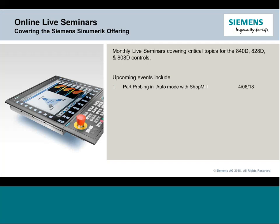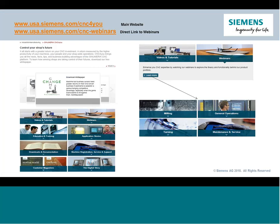Before we begin, let's highlight some of the things we have coming up. In April, we're going to be doing a part programming webinar specific to ShopMill in auto mode — in-process measuring. All of our webinars can be found at our main CNC4U website. You can use the direct link or the CNC webinars link. Additionally, check out the CNC4U website for extra material: videos, tutorials, documentation and manuals. It's a great resource for anything Cinemeric-based.